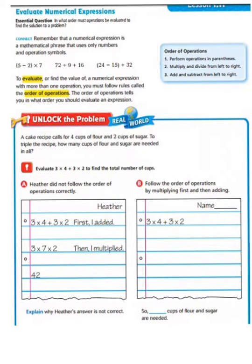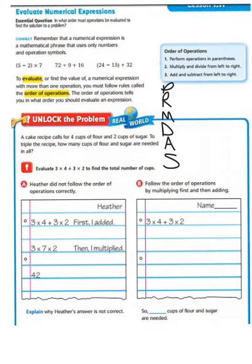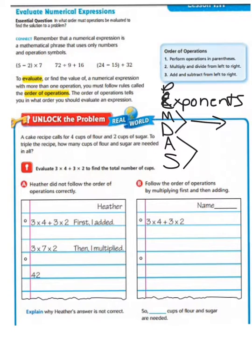Now remember, some of you learned this last year. We've got 'Please Forgive My Dear Aunt Sally,' or 'Please Excuse My Dear Aunt Sally.' You start with parentheses first, then exponents second. Multiplication and division are done at the same time from left to right. Addition and subtraction are done at the same time from left to right. That is the order of operations, and your acronym is PEMDAS.